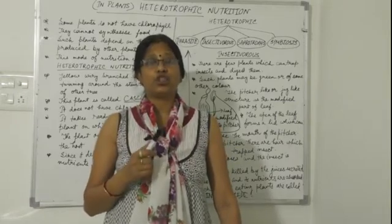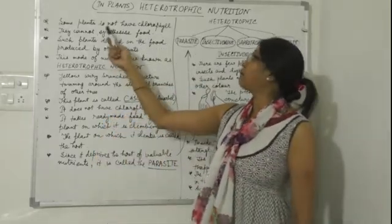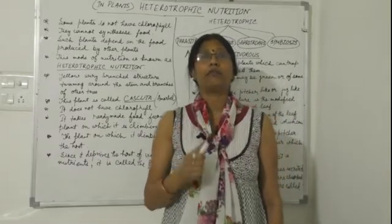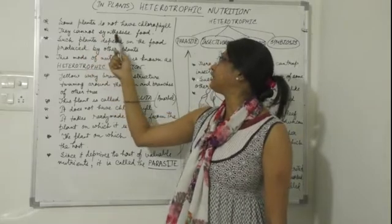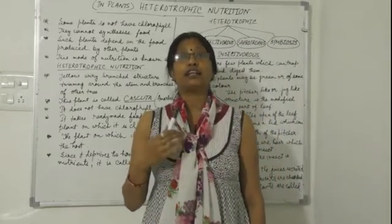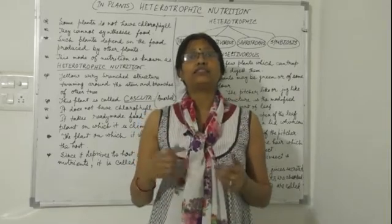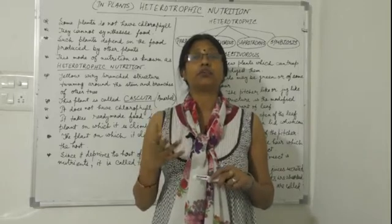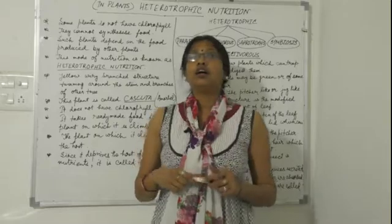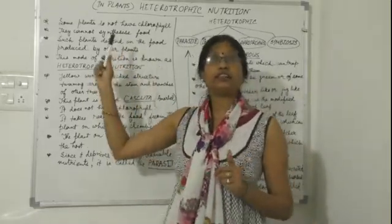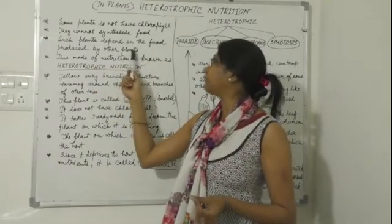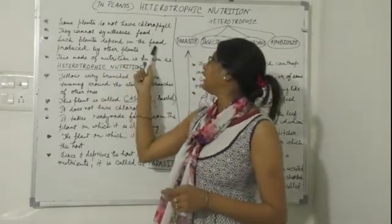Today we will discuss heterotrophic nutrition in plants. Some plants do not have chlorophyll. Plants which have chlorophyll can make their food, but plants without chlorophyll cannot synthesize food. As discussed earlier, chlorophyll is a green pigment that traps solar energy, which is necessary for photosynthesis — the process by which plants make their food. Without chlorophyll, photosynthesis cannot happen.